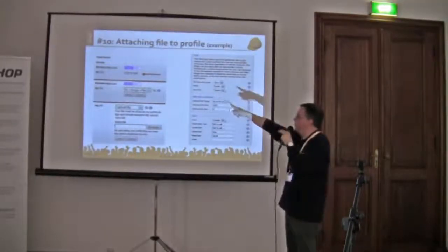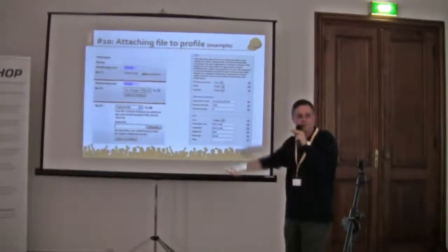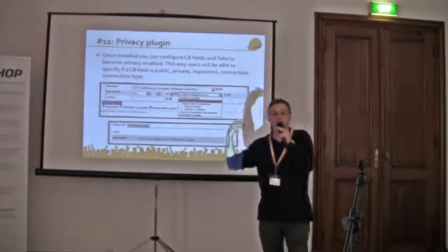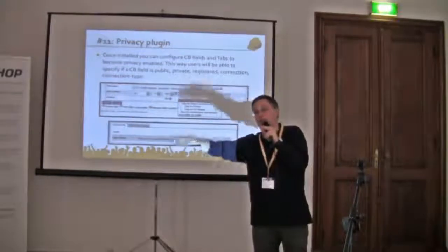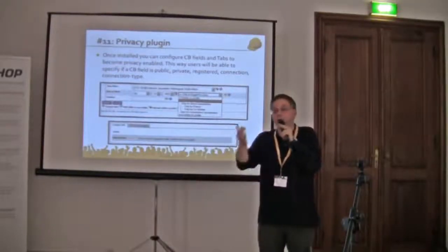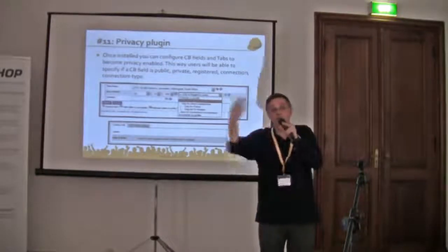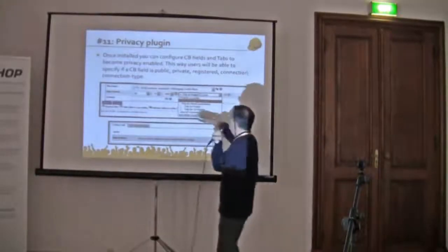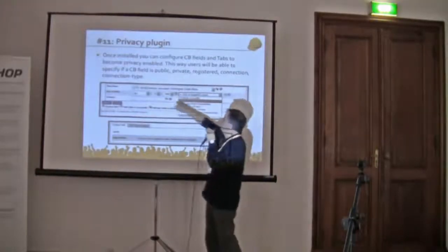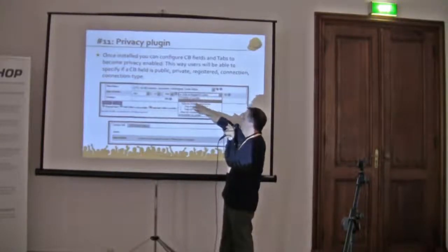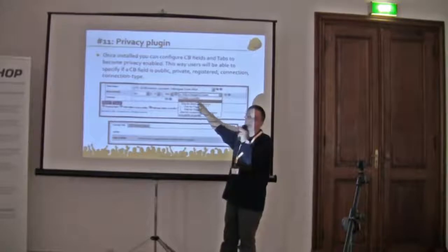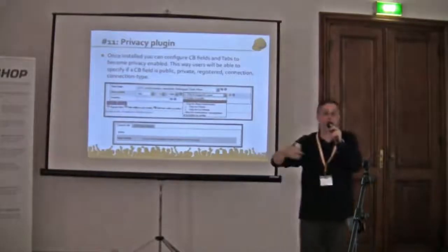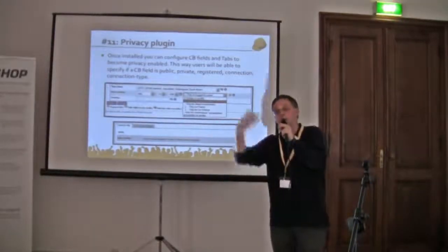The privacy plugin — you can install this and then configure it to any tab or any field. So if you have a field or a tab that you want the user to be able to decide who sees it, just install this, configure it, and then the user in the front-end, for example, will see 'Date of birth — visible on profile only to logged-in users.' For example, only registered users could see it, or only connections, or only connections of a certain type. It's up to you to configure from the back-end what you allow the user to do in the front-end.